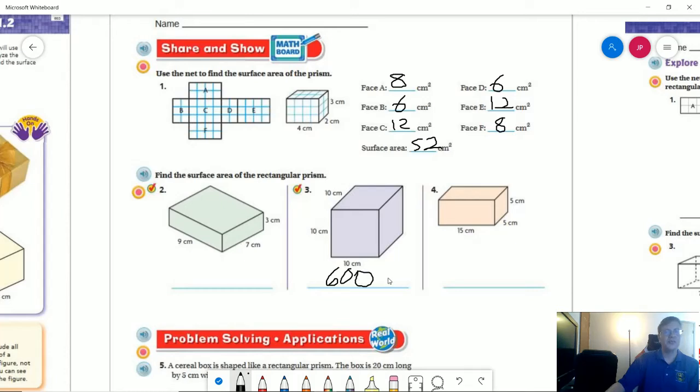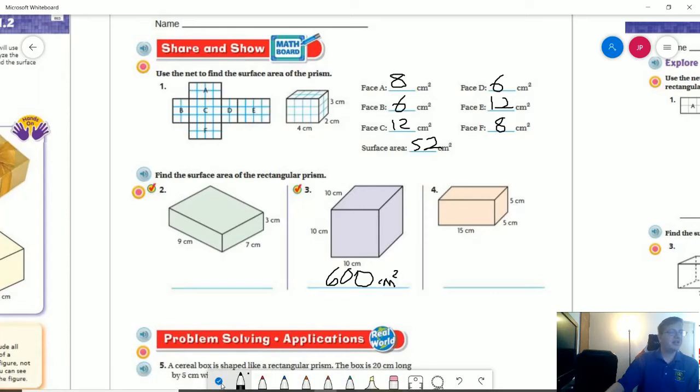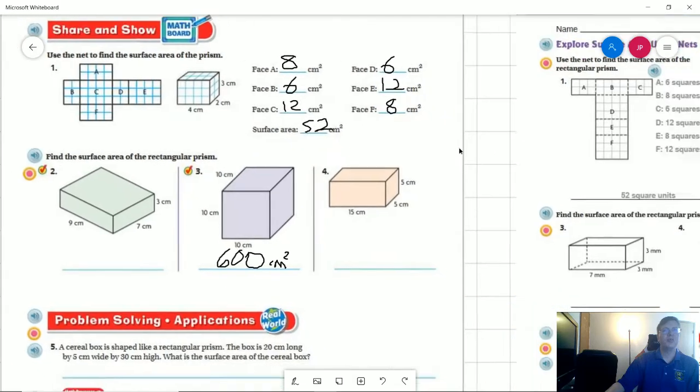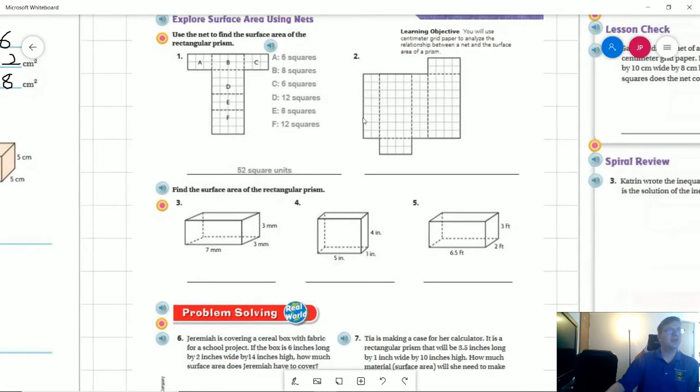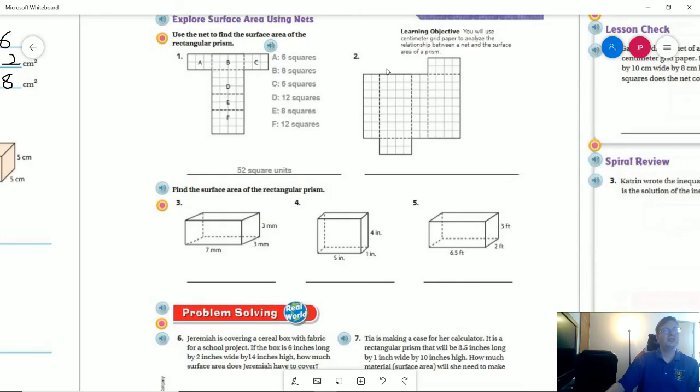And again, because we are working with area, it's going to be 600 centimeters squared. So really quick, let me talk you through what I want you to do for the homework in case you are seeing this beforehand. So for number two, all they need you to do is find the answer. So you can find the answer by counting up the number of squares, or you could figure out the measurement. So that one is pretty self-explanatory.